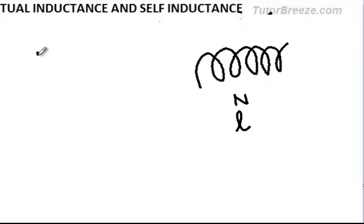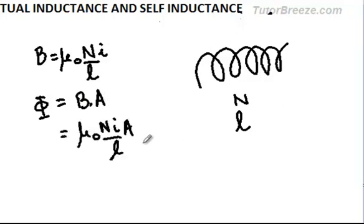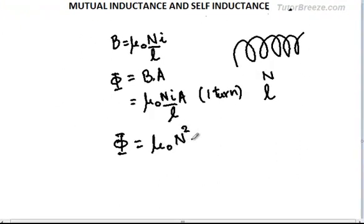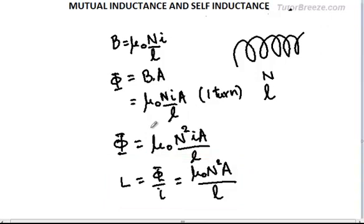Self-inductance L is defined as φ/I, where φ and I are in the same circuit. We will find the self-inductance of a long solenoid of n turns per unit length and length L. The magnetic field inside is μ₀nI. The flux φ linked with each turn is μ₀nI × A. The total flux through all n × L turns is μ₀n²I × A × L. Therefore the self-inductance L = φ/I = μ₀n²A × L. Once again this depends only on the geometry of the coil and not on the current.